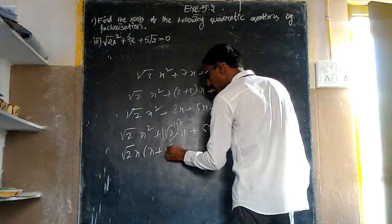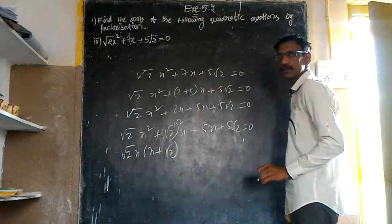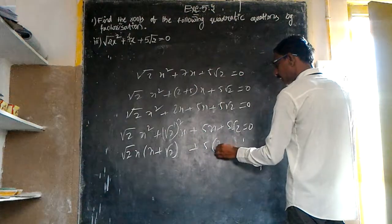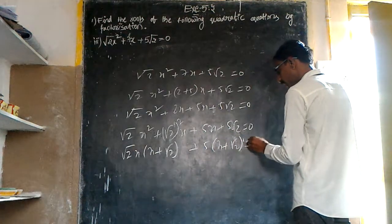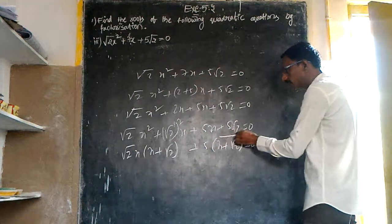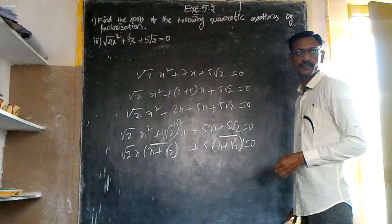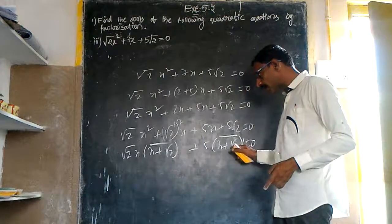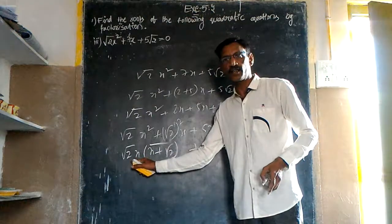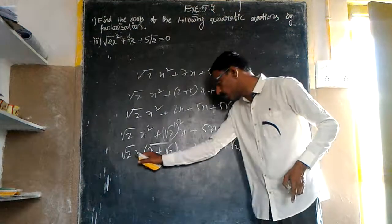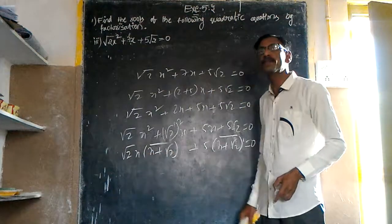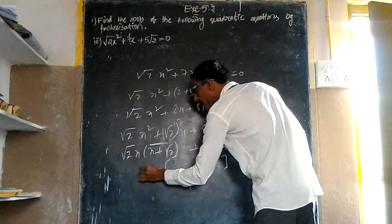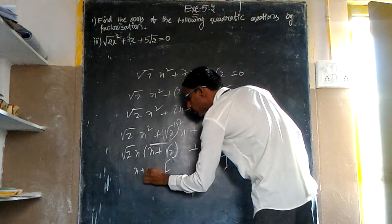See, x + √2 = 0. Here we have a single term and √2x + 5. Here we have x + √2.